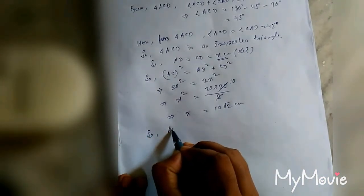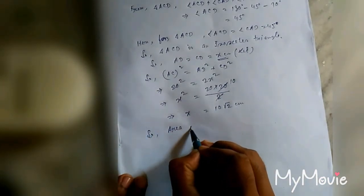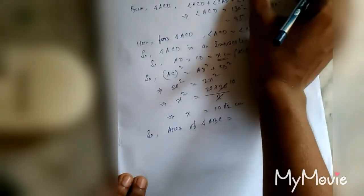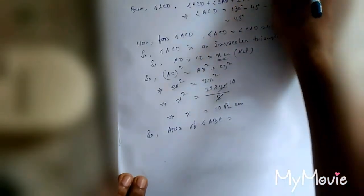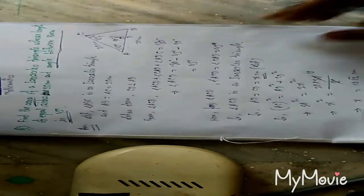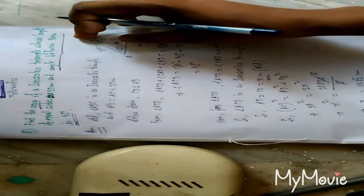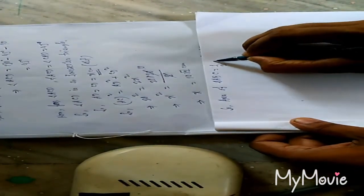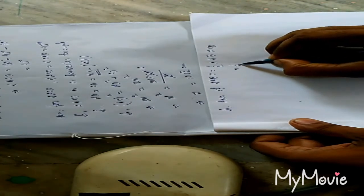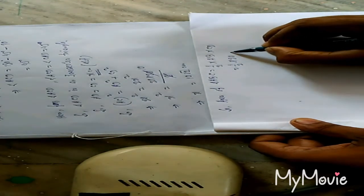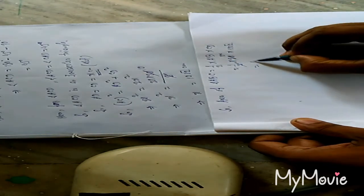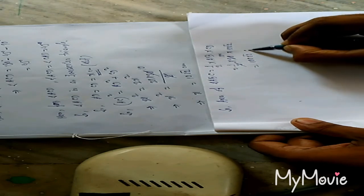So area of triangle ABC, here base is also known, height is also known. So area of triangle ABC is equal to half into base AB into height CD. This equals half into 20 into 10 root 2. This equals 100 root 2 centimeters square.